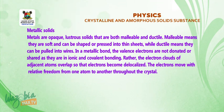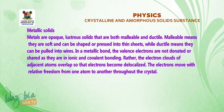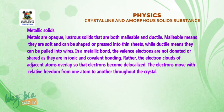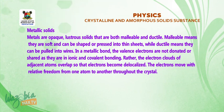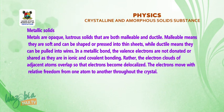In a metallic bond, the valence electrons are not donated or shared as in ionic and covalent bonding. Instead, the electron clouds of adjacent atoms overlap so electrons become delocalized and move with relative freedom from one atom to another. For this reason, metals tend to have high melting points. An alloy is a solid mixture of a metallic element with another substance. Bronze is an alloy of copper and tin, while steel is an alloy of iron, carbon, and other elements.